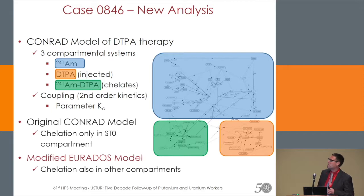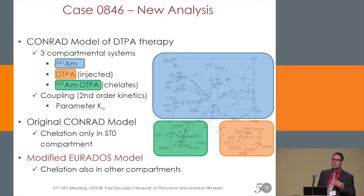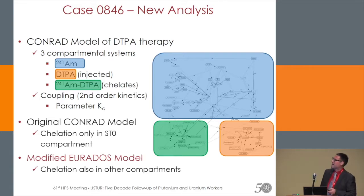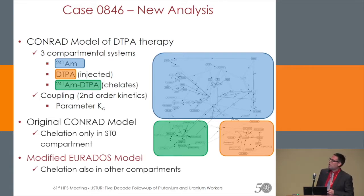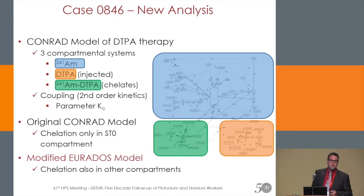When the Konrad project finished, we continued working in the Eurodose Working Group 7 — Maria already reported about some of the work. We reformulated the model so that chelation is also possible in other compartments like the liver compartments.